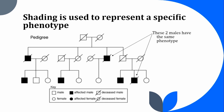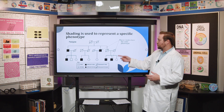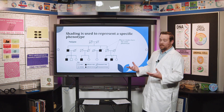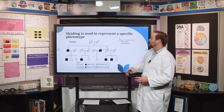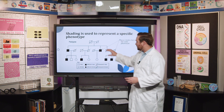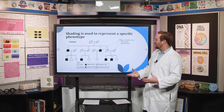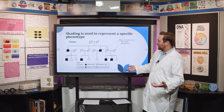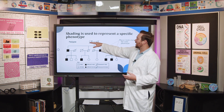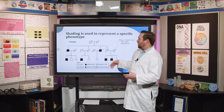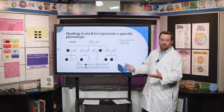Shading is used to represent a specific phenotype. Both of those shaded squares are showing whatever trait we're tracking, and all of the shaded shapes show that same phenotype. Because this trait doesn't show up in every generation — you can see it's not in the first generation — whatever trait this is, it is a recessive trait.